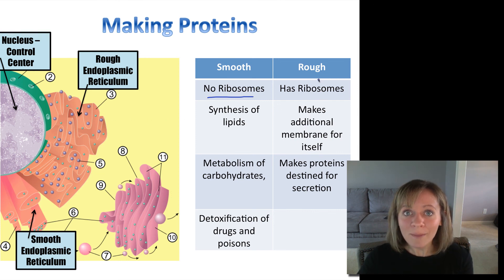The rough ER probably makes a lot of proteins, doesn't it? And the smooth ER does not. What the smooth ER does is it makes lipids, lipids for especially membranes. Every single one of these organelles that we're going to look at is made up of a phospholipid membrane. Isn't that cool? Rough ER is going to also make additional membrane for itself to repair itself. Smooth ER metabolizes carbohydrates and it detoxifies drugs, poisons. Anytime you take a medicine, it's going to go through the smooth ER. And then the rough ER makes proteins destined for secretion.